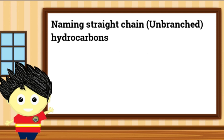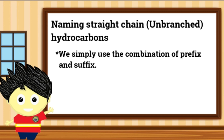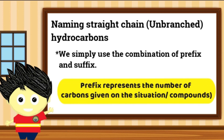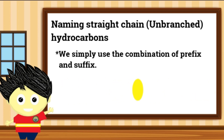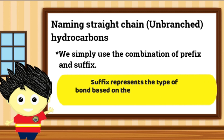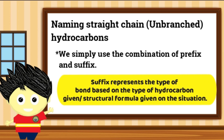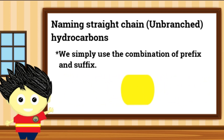In naming hydrocarbon compounds, we simply use the combination of prefix and suffix. Ang prefix ang magre-represent sa bilang ng carbons na mayroon sa structural formula o given ang isang compound. Samantalang ang suffix naman ang magre-represent sa uri ng bond na mayroon ang isang compound. Kung babalikan natin ang ating naging diskusyon kanina, nabanggit natin na ang uri ng hydrocarbons ay nalalaman natin batay sa bonds na mayroon ito.